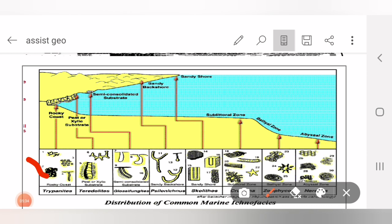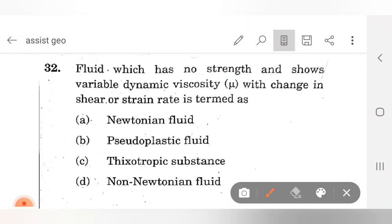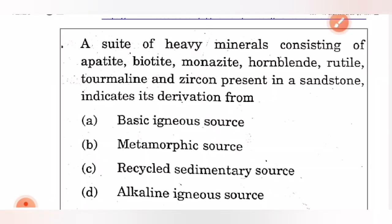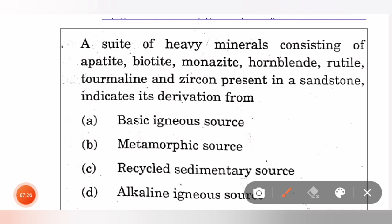Same dynamic viscosity - we can say it is Newtonian fluid. Pseudoplastic and thixotropic substances have some amount of strength. It is not said that it has no strength, so answer will be non-Newtonian fluid. This question is very interesting: a suite of heavy minerals consisting of apatite, pyrite, monazite, hornblende, rutile, tourmaline, and zircon present in sandstone indicates its derivation from... If it is written that zircon is present, and we know zircon can suffer many cycles of weathering and all conditions, so it is recycled sedimentary source. Transfer might be the answer for this question, but they have said it should have uniform wind direction, so linear would be the answer.